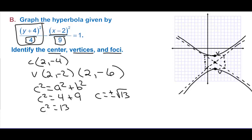We go 3.6 from the center up and 3.6 down. The focal points are lined up with the x value of 2. Since the center y-coordinate is negative 4, the focal points are at (2, negative 4 plus or minus square root of 13).